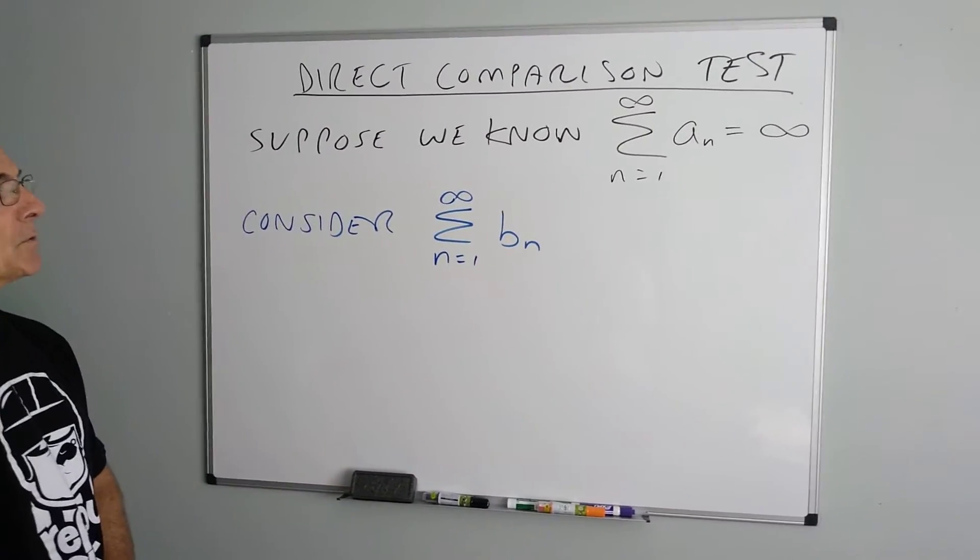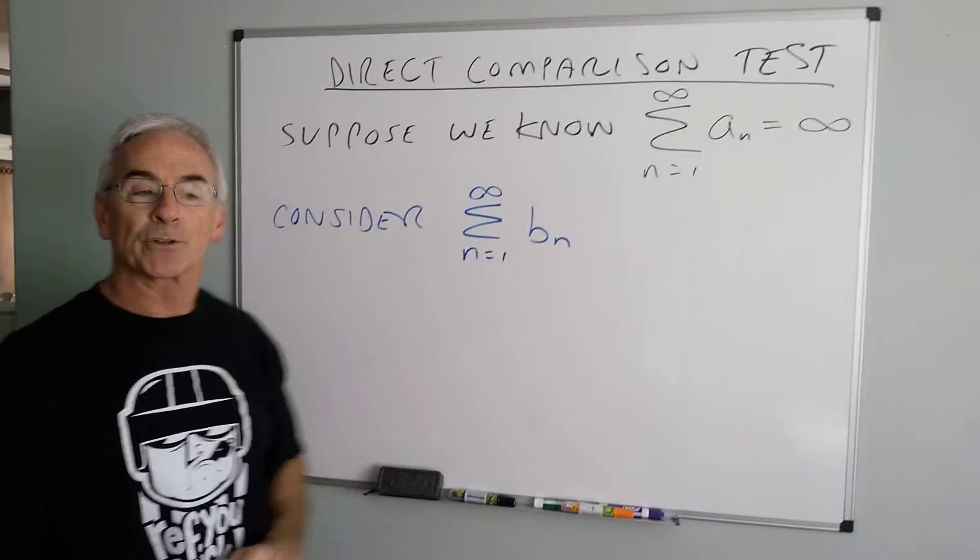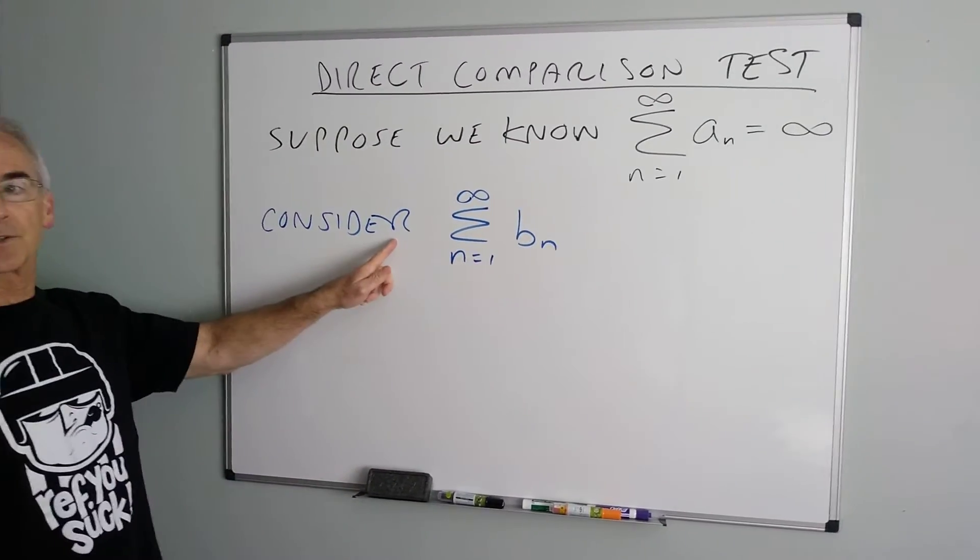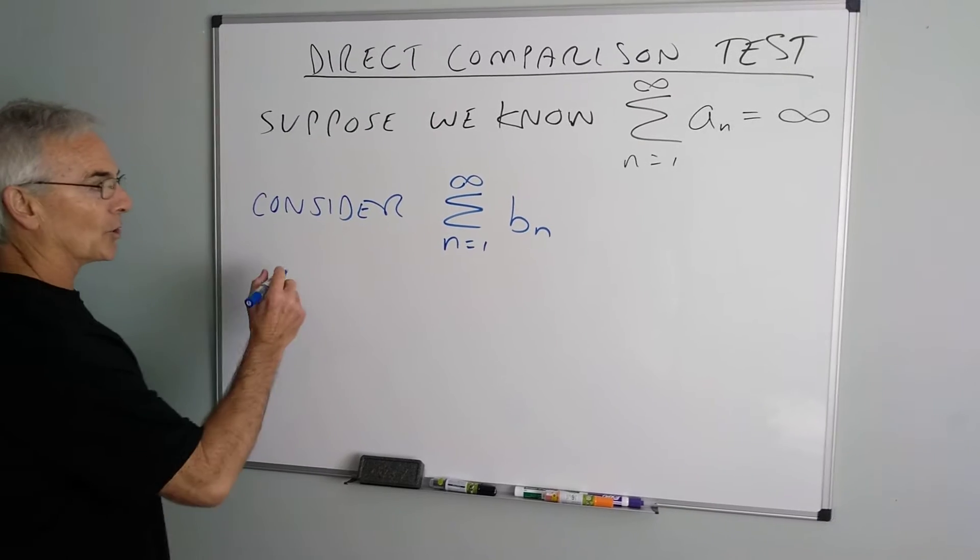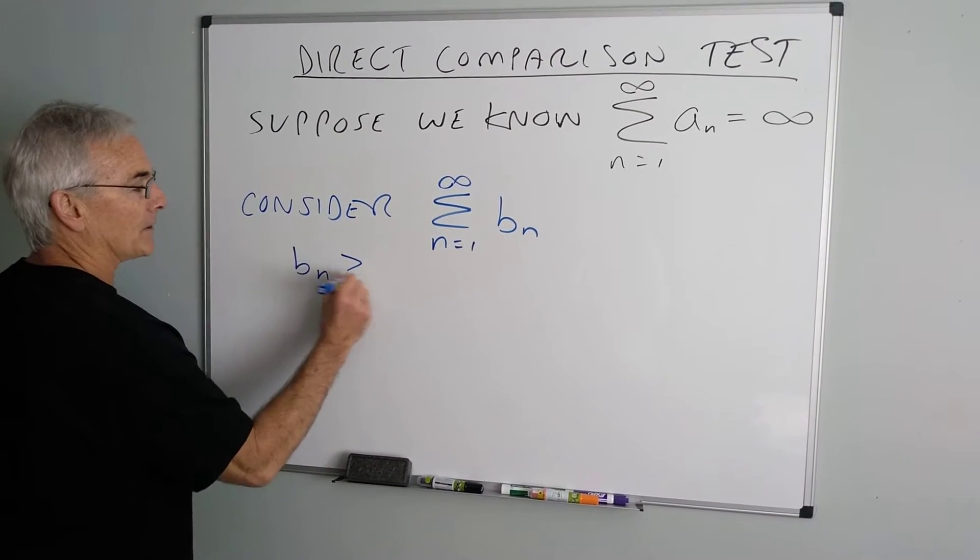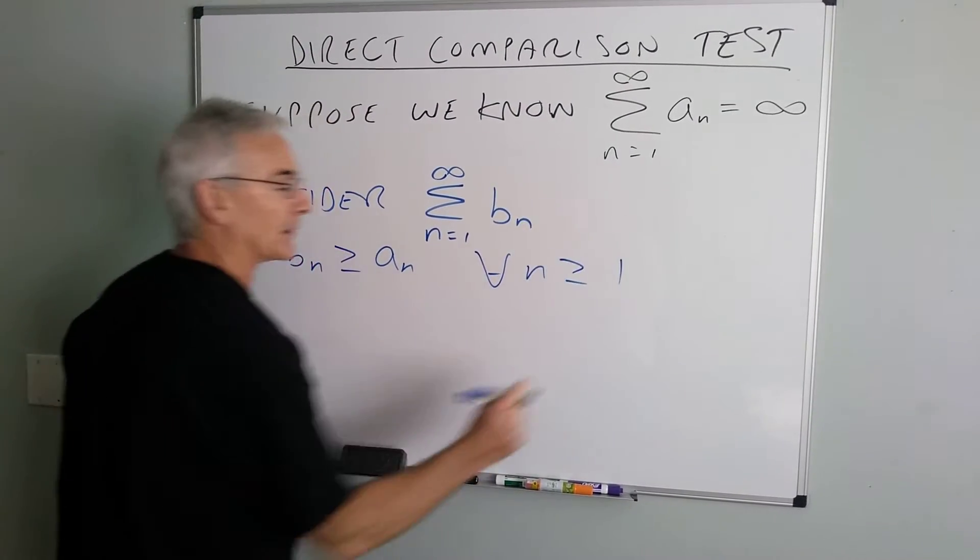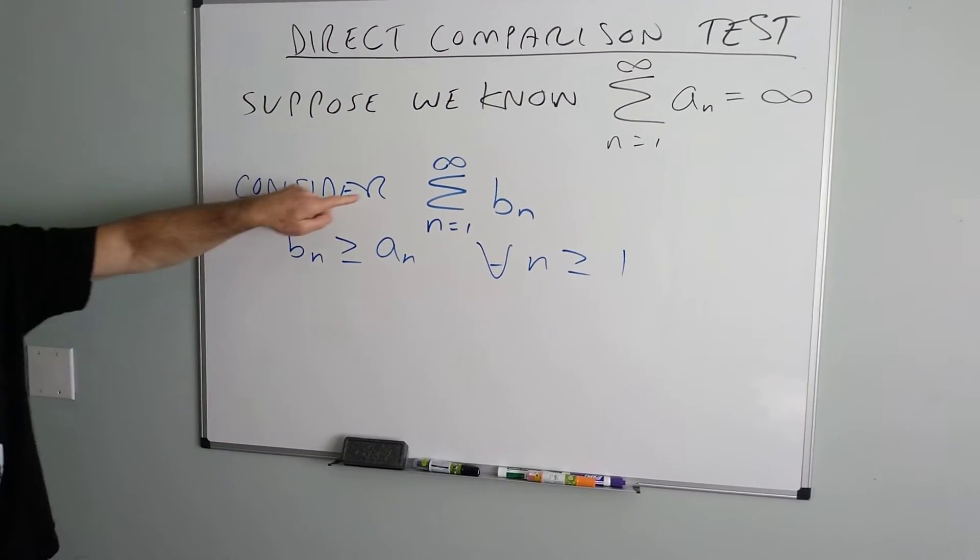So let's start by assuming we know the behavior of a particular series. We know that it's infinite. Now we're trying to discover the behavior of another series, but we notice that term by term the BNs are greater than or equal to the ANs for all N greater than or equal to 1. Meaning term by term these are bigger.